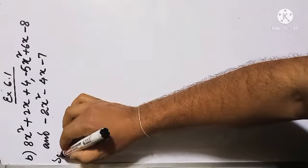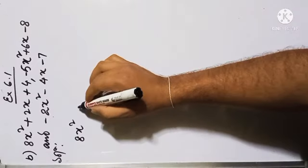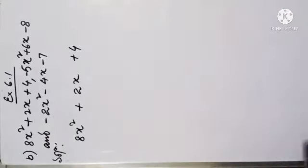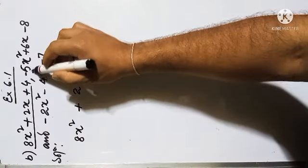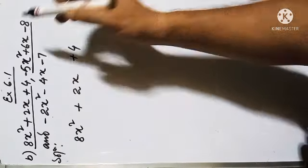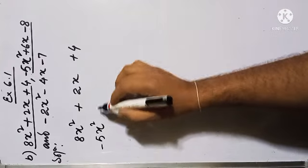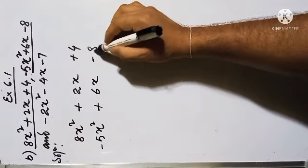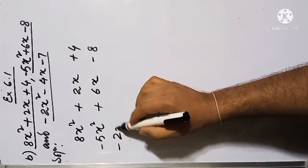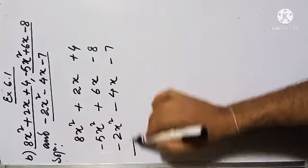We'll move to the next question. The first expression is 8x squared plus 2x plus 4. The second expression is minus 5x squared plus 6x minus 8, so I'm going to write minus 5x squared, plus 6x, minus 8. At the last we have minus 2x squared minus 4x minus 7.